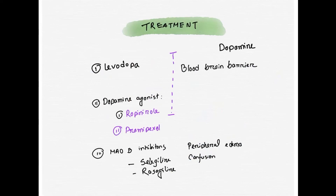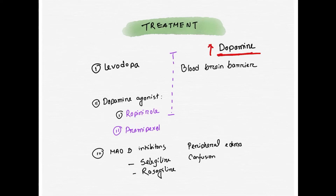If everything is positive, this is the case of Parkinson's disease. Now, how do we treat it? Treatment gives a very dramatic response. The treatment strategy is based on the fact that dopamine-producing neurons in the substantia nigra degenerate, meaning dopamine decreases. So if we can increase dopamine, the treatment goal is achieved.